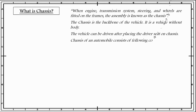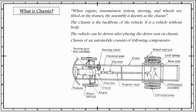Chassis of an automobile consists of the following components: first, engine; second, wheels, radiator, transmission system consisting of clutch, gearbox, universal joint, propeller shaft, differential and rear axle. Then suspension system is also a part of chassis. Then steering system is a part of chassis. Brakes and fuel tank. All these components constitute one chassis of an automobile.